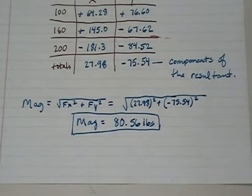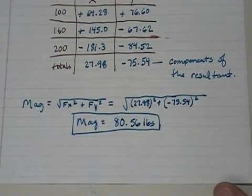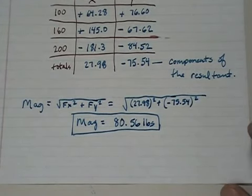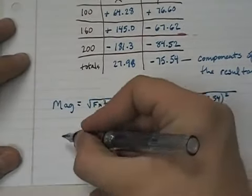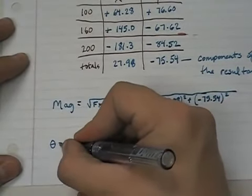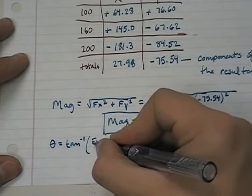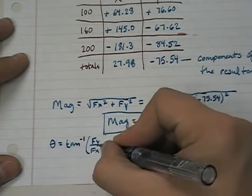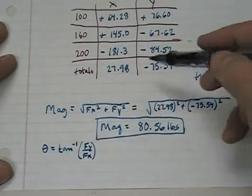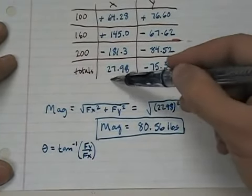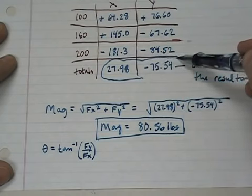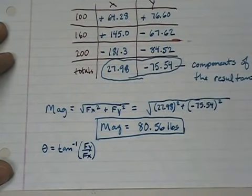Now, we're not done. We've answered half of the question. The question said to find the magnitude and the direction. So now we have to find the direction angle. Well, if you recall, the direction angle for any vector is the inverse tangent of the y component divided by the x component. Again, these are the components of our resultant.